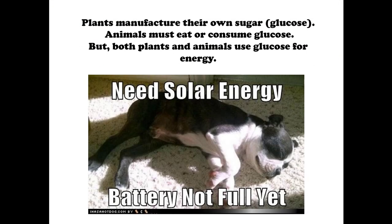Plants manufacture their own sugar or glucose, whereas animals must eat or consume glucose. But both plants and animals use glucose for energy.